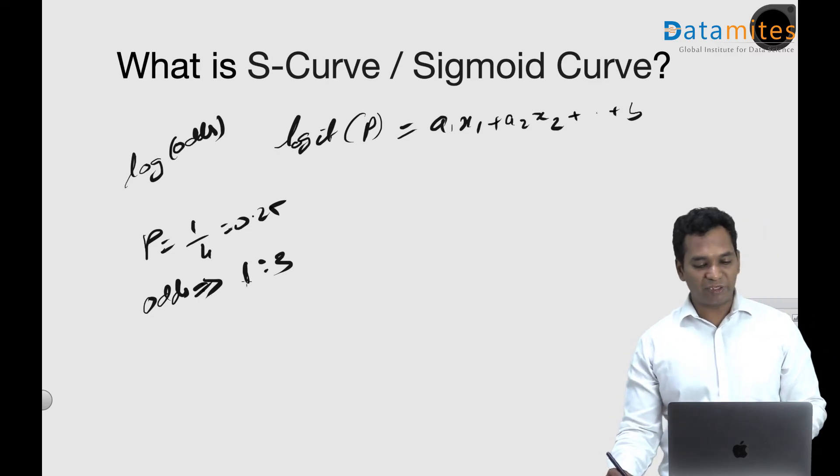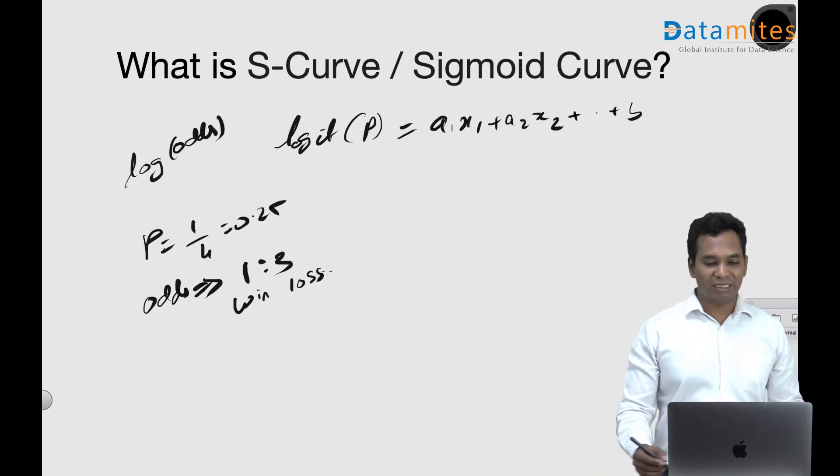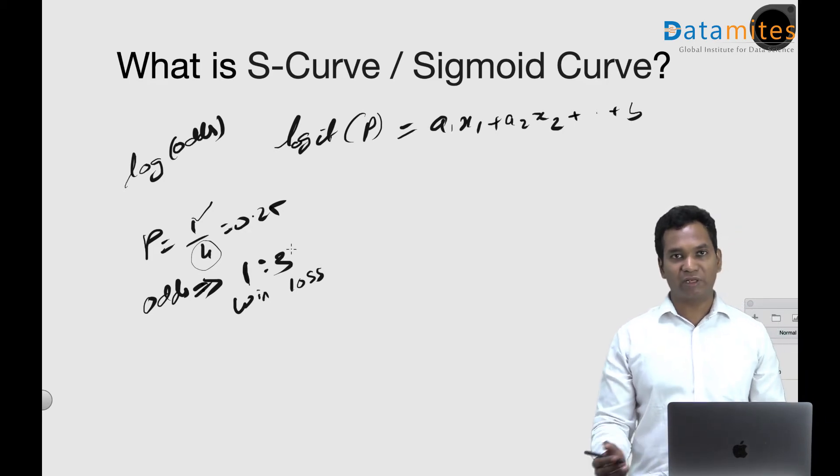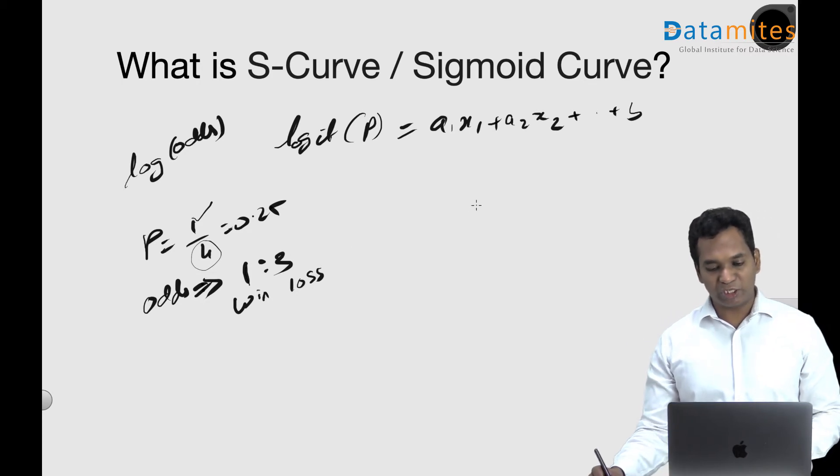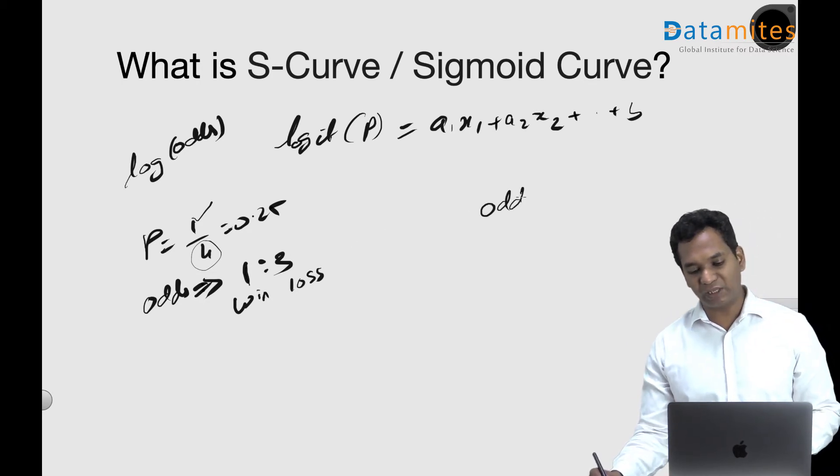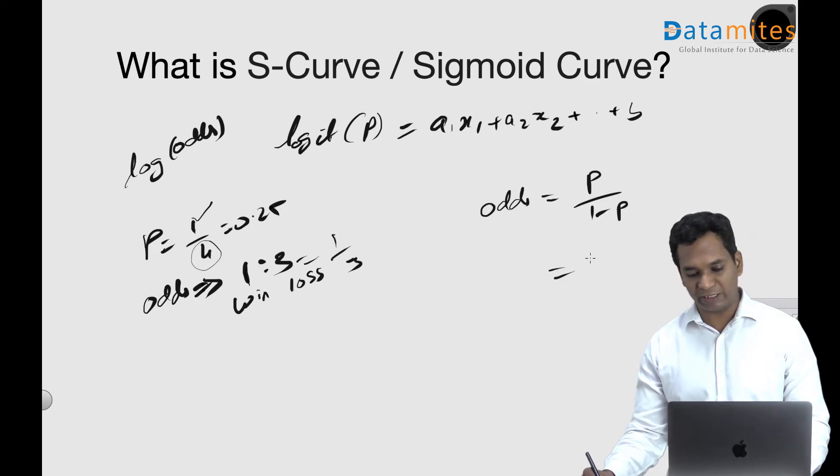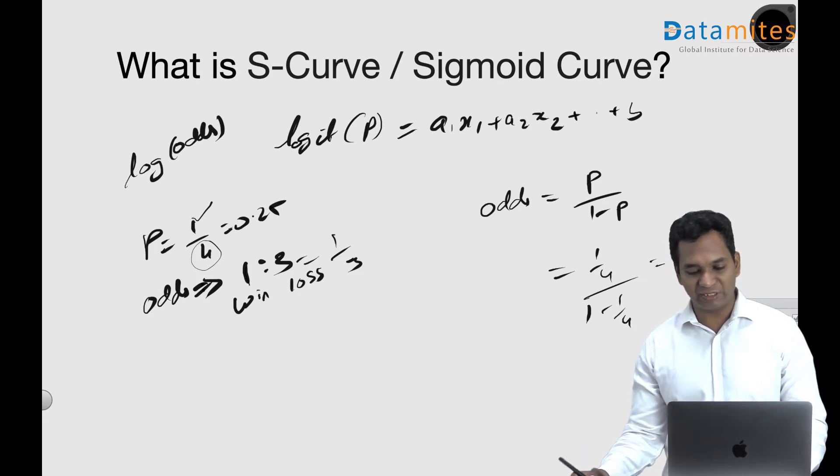So one is to three means for every one winning you lose three times. Both are the same. Here I'm saying out of four times playing, one time you win. Here I'm saying for one winning you lose three times. Both are the same notation. When you want to equate it, your odds notation is equal to p by one minus p. This can be written as one by four over one minus one by four, which basically translates to one by three, which is odds notation.